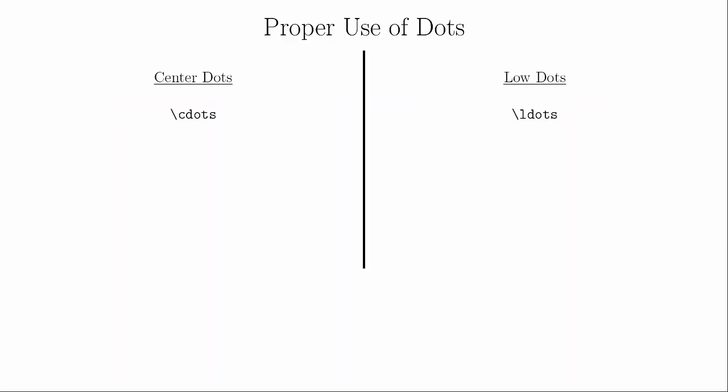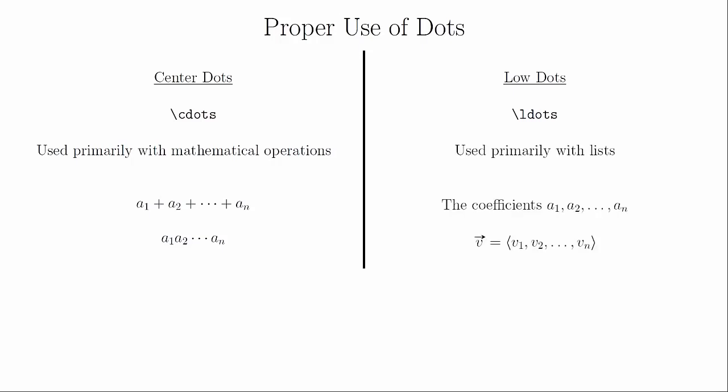There are two different types of ellipses that can be used in LaTeX: \cdots and \ldots. The \cdots command creates dots that are halfway up the line, and the \ldots command makes dots at the bottom of the line. The \cdots are used in places where arithmetic or other math symbols are being used, such as a sum. The \ldots are used when the structure is more like English than math, such as between commas in a long list. Here's an example that mixes the two types of dots.